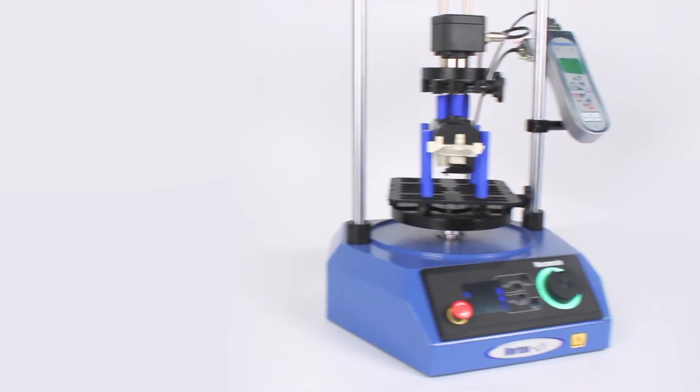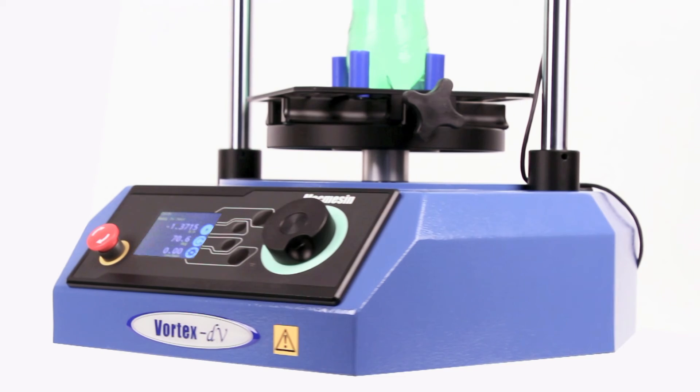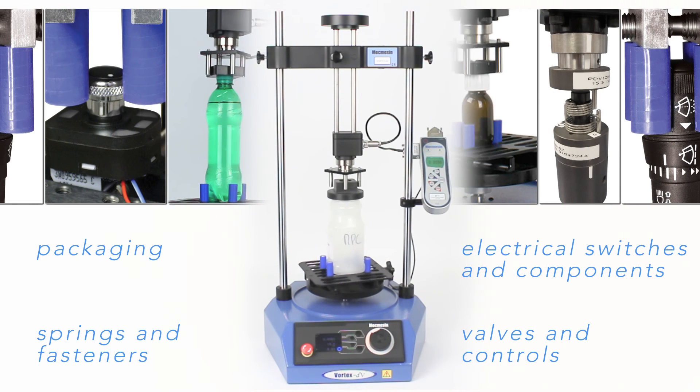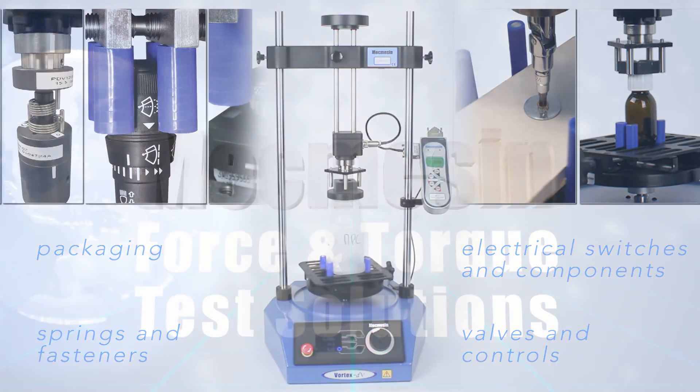With its speed range increased to 30 RPM and an angular resolution of 0.1 degrees, the Vortex DV is ideally suited to applications in packaging, electrical switches and components, valves and controls, springs and fasteners, and many more.